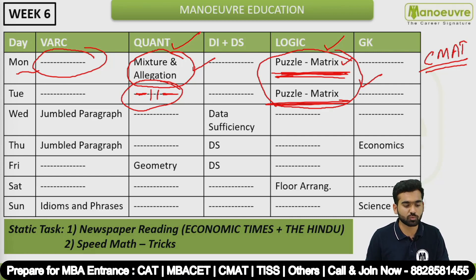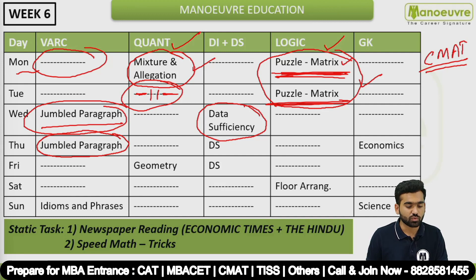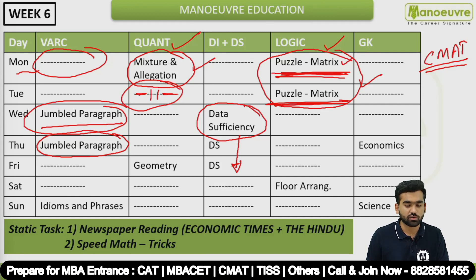Wednesday is for VRC — specifically jumbled paragraphs. Thursday and Friday are for Data Sufficiency. You have three days to work on Data Sufficiency. We can expect one or two questions from this topic in the examination, and since one question carries four marks, Data Sufficiency is very important.